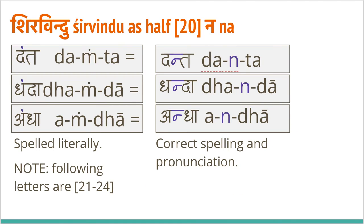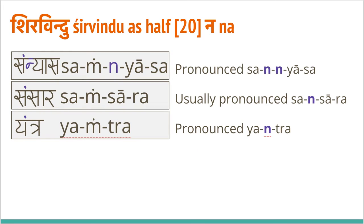Going to sirvindu as na itself — the main difference is if you write it literally it would be 'ma', but don't pronounce it as ma; it should be pronounced as na. 'Danta' — very clear na — 'danta', 'dhanda', 'andha'. There are also cases where what follows the sirvindu is not from ta barga and we still pronounce it as na: 'sanyasa' — sometimes the sirvindu is completely dropped, which is still fine. 'Sansara' can be 'samsara' but 'sansara' is more common in Nepali. 'Yantra' — not 'yamtra' although written that way.